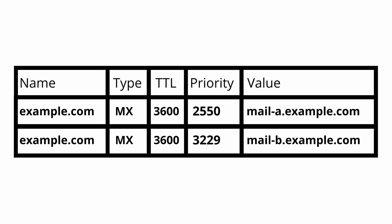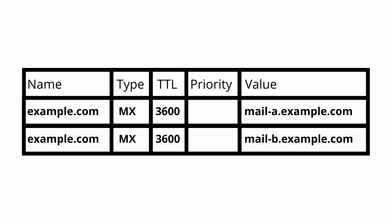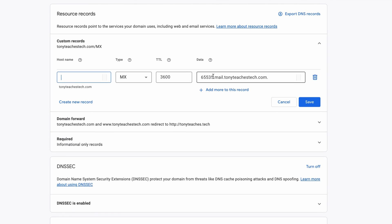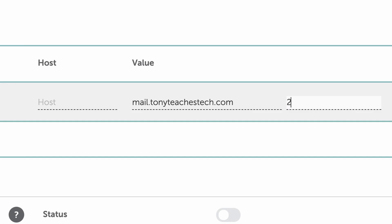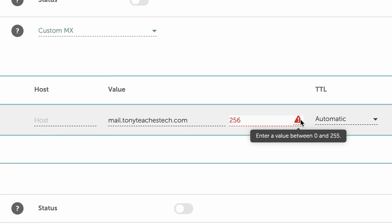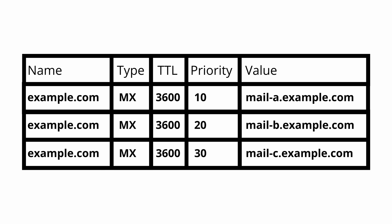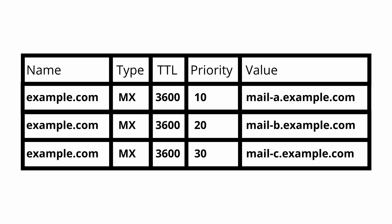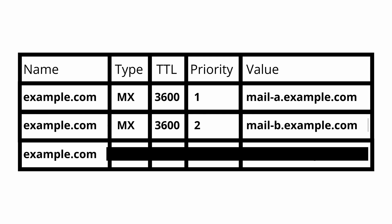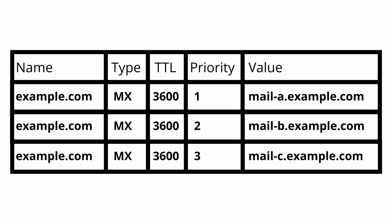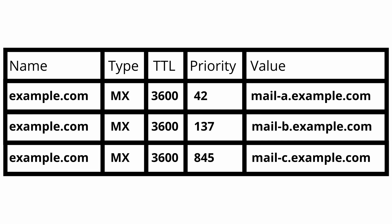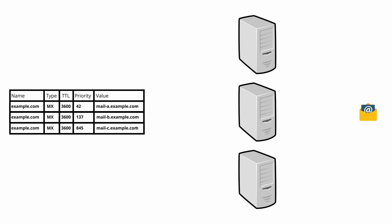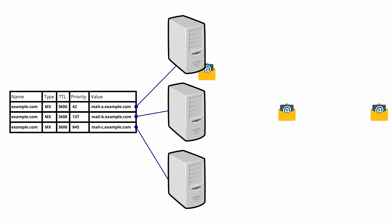Priority values for MX records can be any integer as small as zero. At least for Google domains, the largest priority value that they accept is 2 to the power of 32, whereas Namecheap goes up to 255, so it just depends. Because they are relative, having three mail servers with priority of 10, 20, and 30 is equivalent to having priorities of 1, 2, and 3, and is even equivalent to something like 42, 137, 845. In each of these cases, email will be sent to the server with the smallest priority value first.